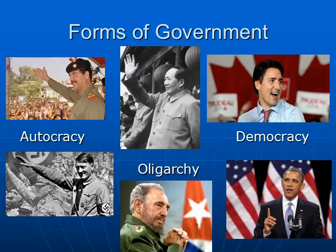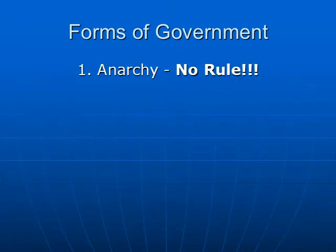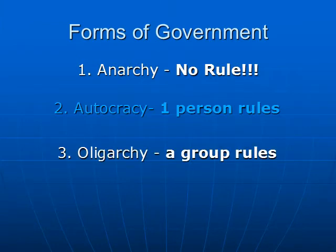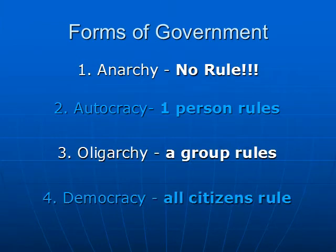In this video we are going to explore some different forms of government in the world. We've really got four general forms of government: anarchy, where there are no rules, no ruler, etc. — that one's currently not existing. We've got autocracy, which is one person ruling. We've got oligarchy, which is a group. And we have democracy, which is everybody participates in the rule.